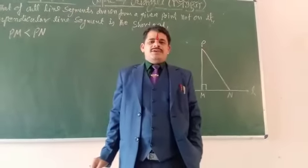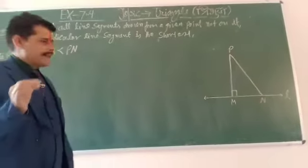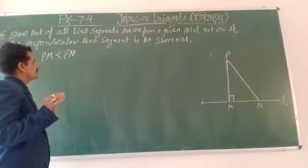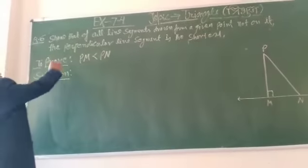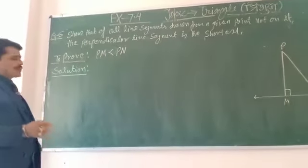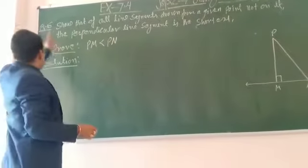Modern students, so now today our topic in triangle chapter for the class 9th students, exercise number 7.4, question number 6. Already we have done with question number 5, and now today we are going to start question number 6.